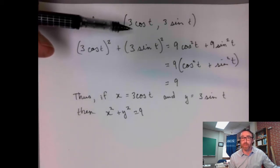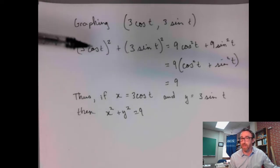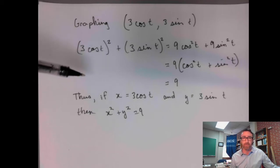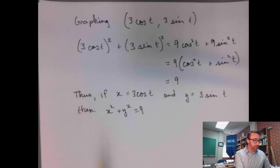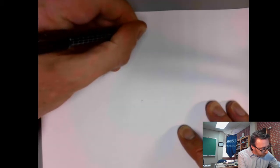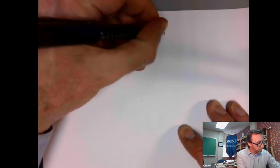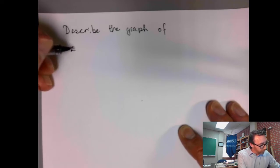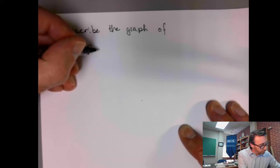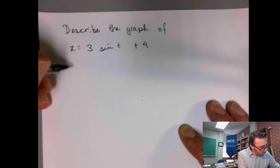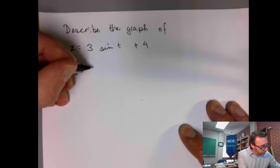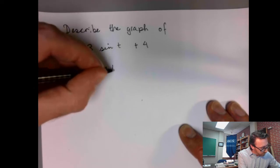And typically, if your parametric equations involve cosine and sine, it's going to be one of these conic sections like this. It'll be a circle, it'll be an ellipse, something like that. Depends on what you have. Let's change it up just a little bit here. Let's try to describe the graph of, let me change things up. Let's do x equals 3 sine t plus 4 and y equals 5 cosine t minus 1.